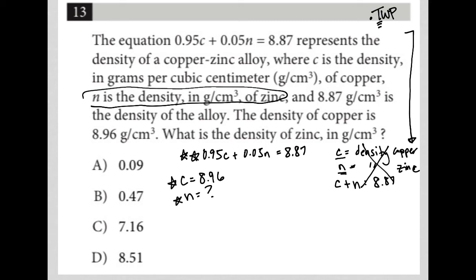I'm going to just take this equation, 0.95, replace C with 8.96, add that to 0.05N equals 8.87. This is the calculator section, so I'm going to go to my calculator and say, well, what is 0.95 times 8.96? I am getting 8.512.